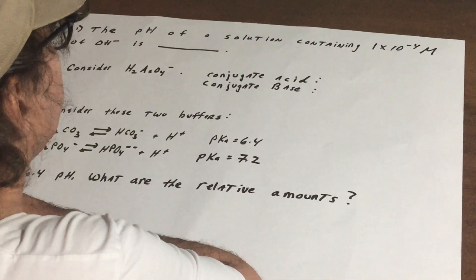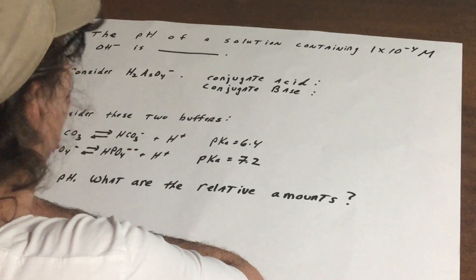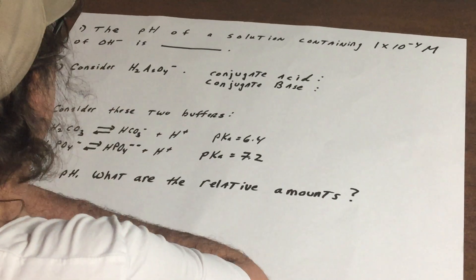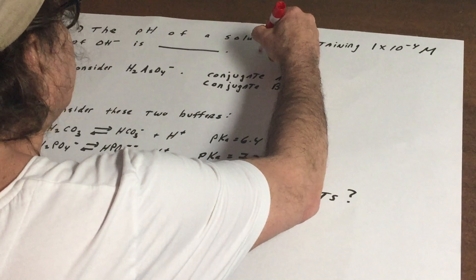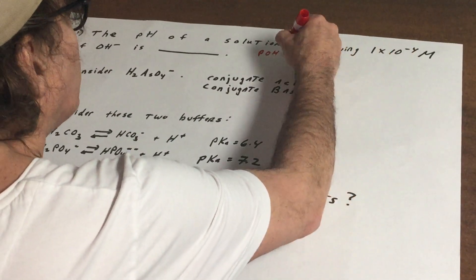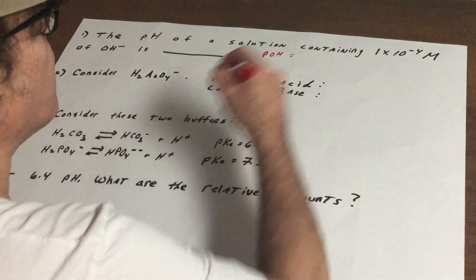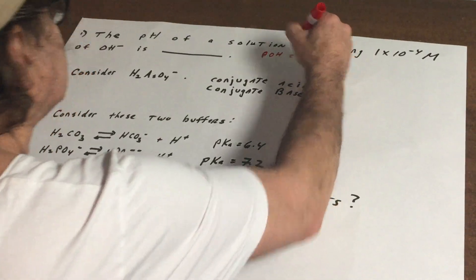First thing you're gonna do the minute you hear you have 1×10^-4 molar of OH-, that tells us that the pOH of the solution, which is -log of 1×10^-4, gives me four.